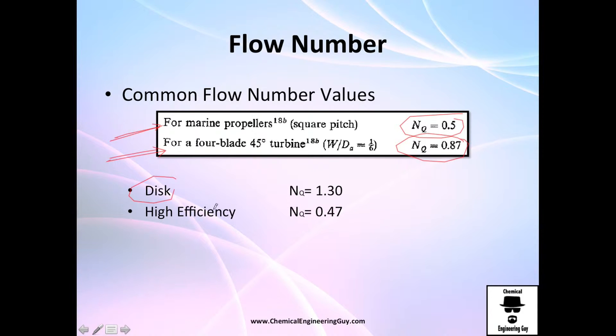For a disc, 1.3. For a high efficiency, you'll have a very low flow number.